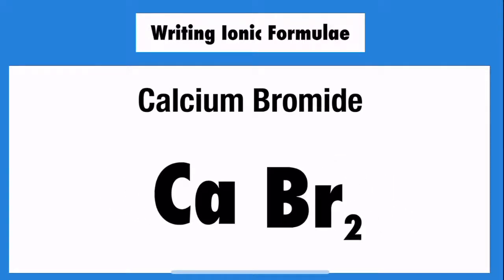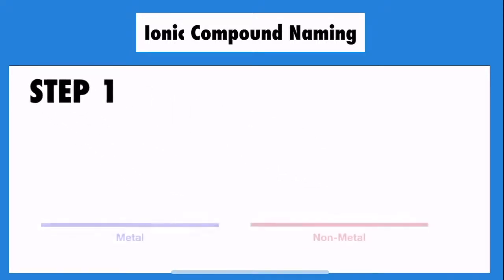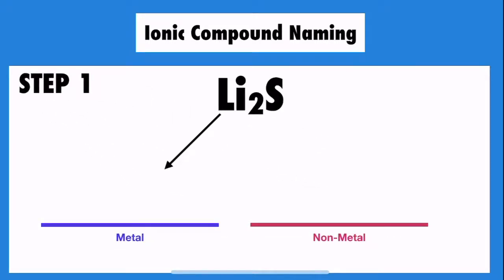How about going from a formula to the name? Well, that's pretty similar. First, write the metal first, and then the non-metal. There's no reason for this. It's just a convention. Step two is remove the end of the non-metal and replace with ide. That's it.